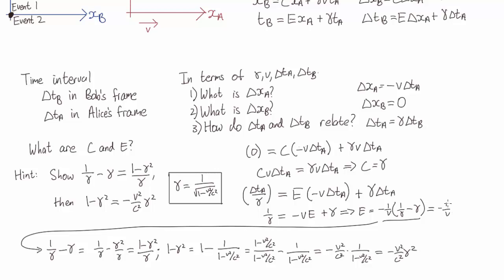So substituting these values into our expression for E, we find E is equal to V on C squared gamma. So now we have our Lorentz transformations.